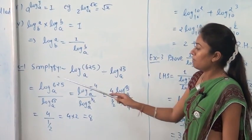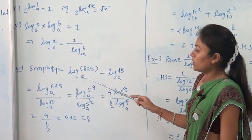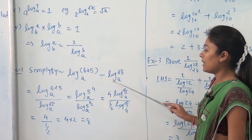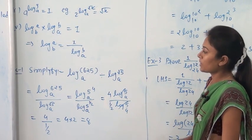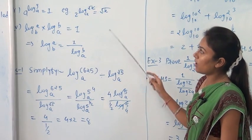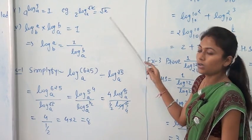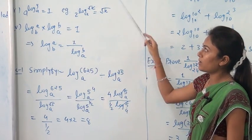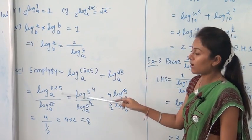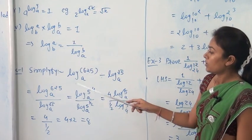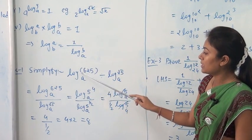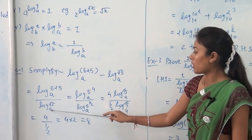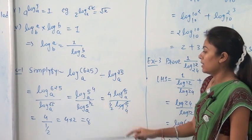Example 1: Simplify log 625 base A divided by log square root 5 base A. Using all the formulas and important rules of logarithm discussed earlier, we can solve this example easily. First, write this in the form log 625 base A upon log square root 5 base A.